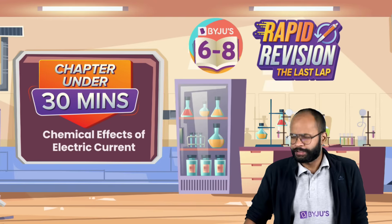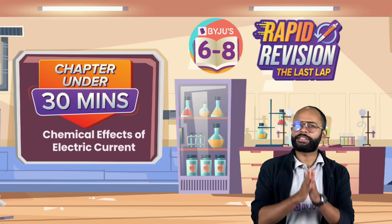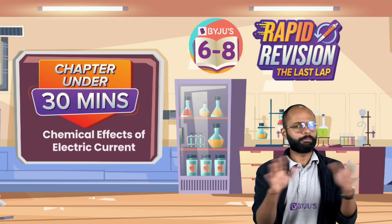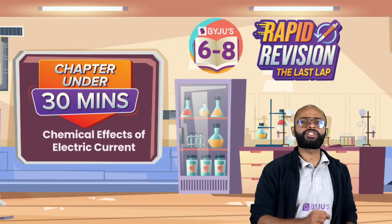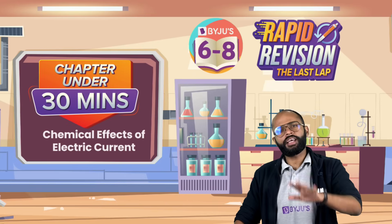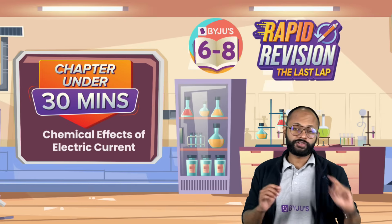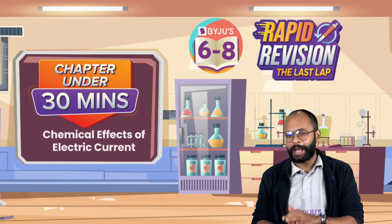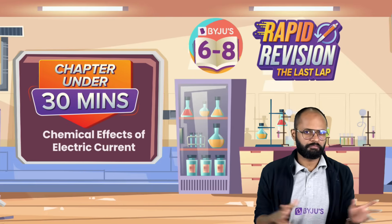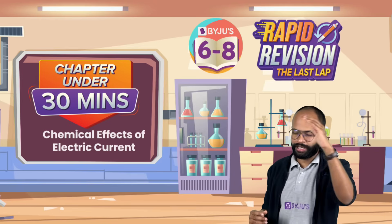Hello 8th grade students, this is Baiju's 6th, 7th and 8th channel and I am Saurabh. Welcome to this amazing series we call Rapid Revision, The Last Lap, where we cover complete chapter under 30 minutes. Today's number is chemical effects of electric current.